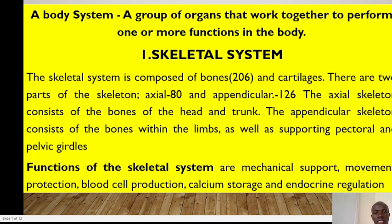There are 12 body systems in the body, starting with the first one, the skeletal system. The skeletal system is composed of skeletal bones and there are 206 in the body. They are categorized into axial skeletal and appendicular skeletal, where axial skeletal consists of 80 bones while appendicular skeletal consists of 126 bones. Within the due course of this training, we'll be able to list all the 80 and the 126.